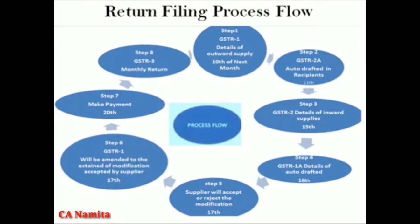Return Filing Process Flow. There are 8 steps. The first step is GSTR1 — output supplies. You will add details in GSTR1. This will be due the following month.